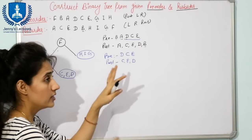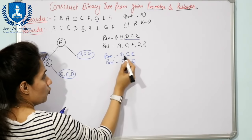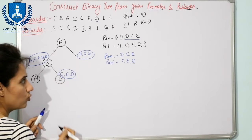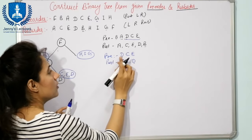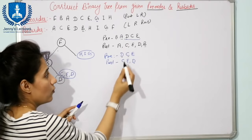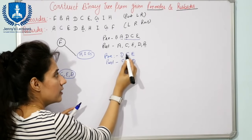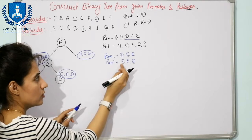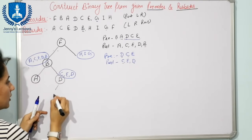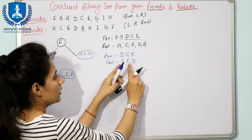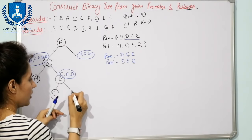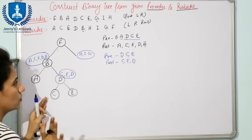Apply the same steps again. Root is D - first element in pre-order, last in post-order. Find successor of D in pre-order: that is C. Find C in post-order - it is at the start. All elements from start to C form the left subtree, so C is the left child of D. The only remaining element is E, so E is the right child of D.